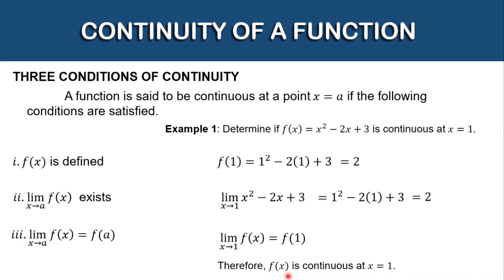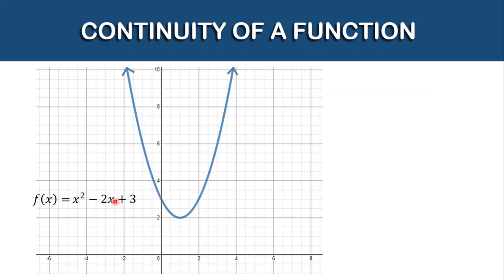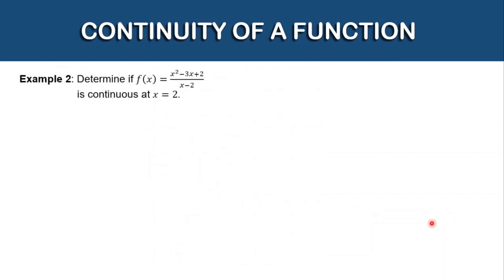Let's take a look at the graph of our function. As you can see, there is no hole, there is no jump, and there is no gap in our graph. Now for example number 2: determine if the function f of x is equal to x squared minus 3x plus 2, all over x minus 2, is continuous at x is equal to 2.